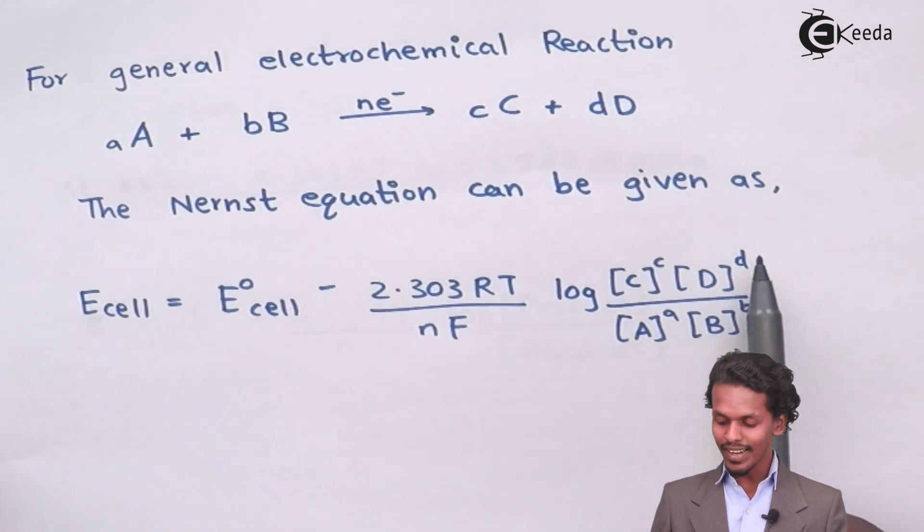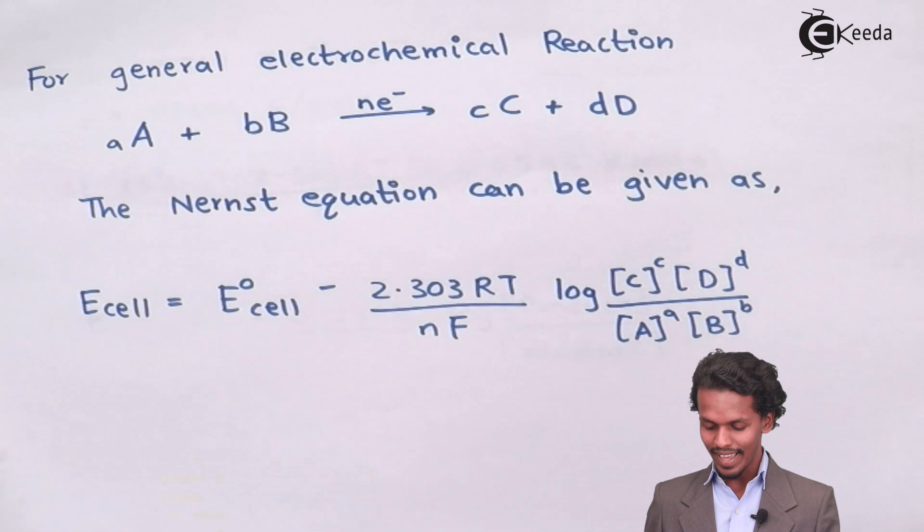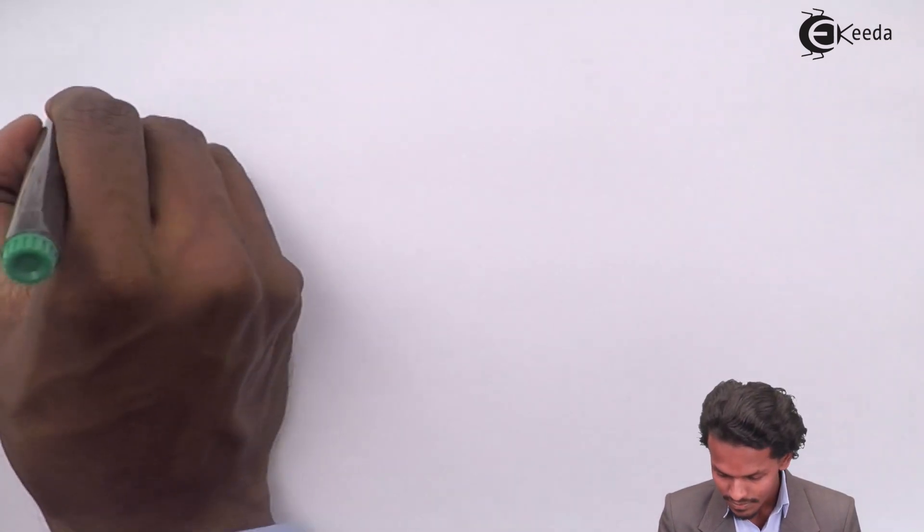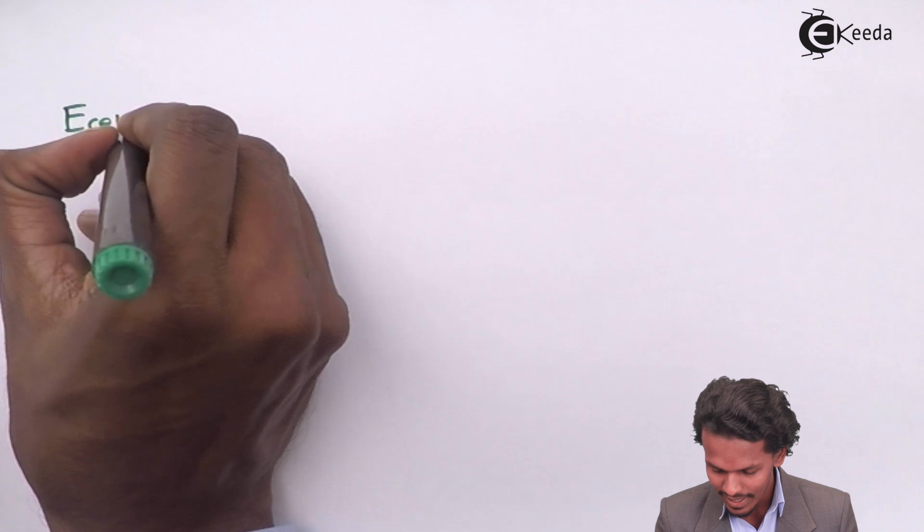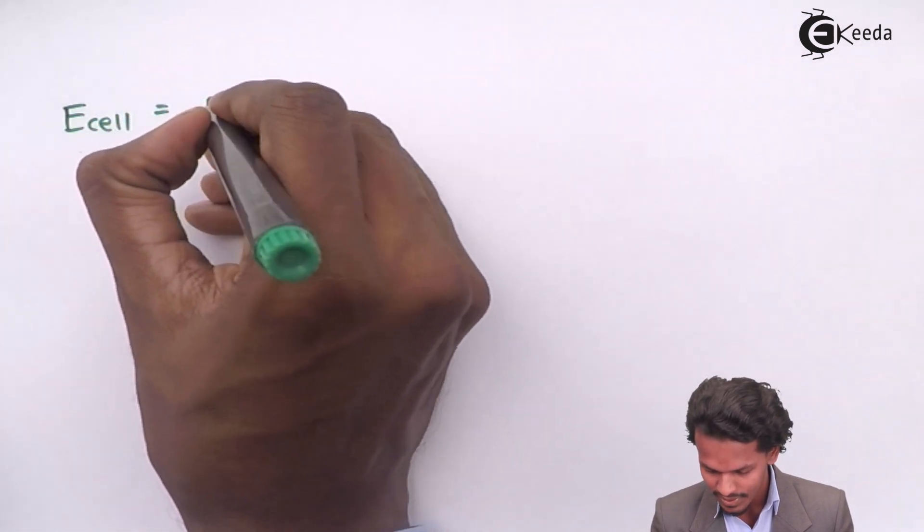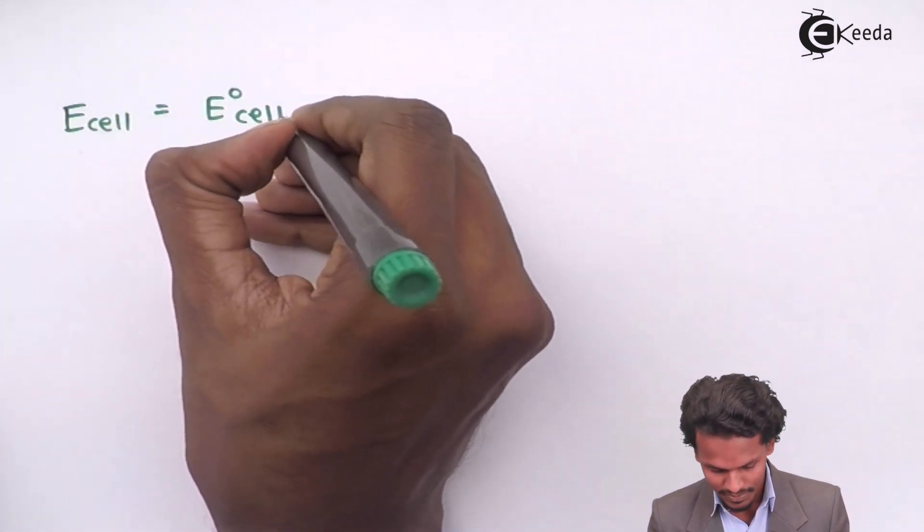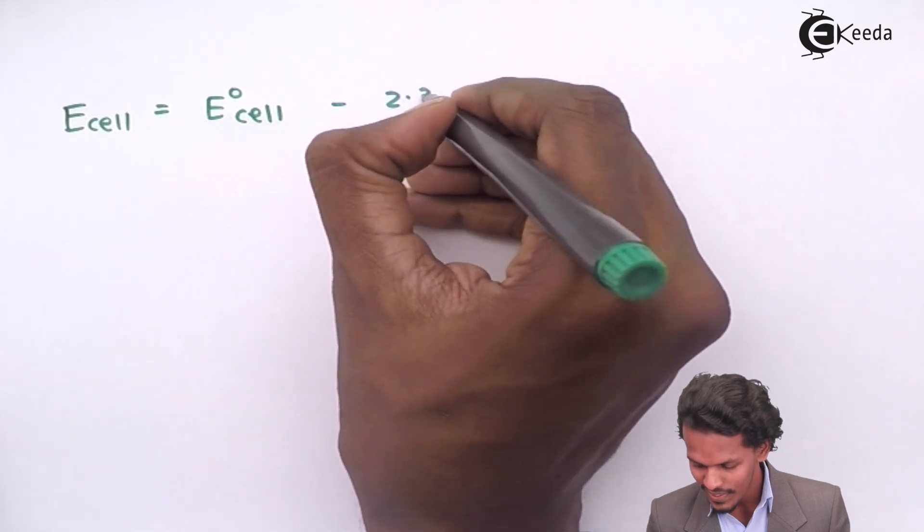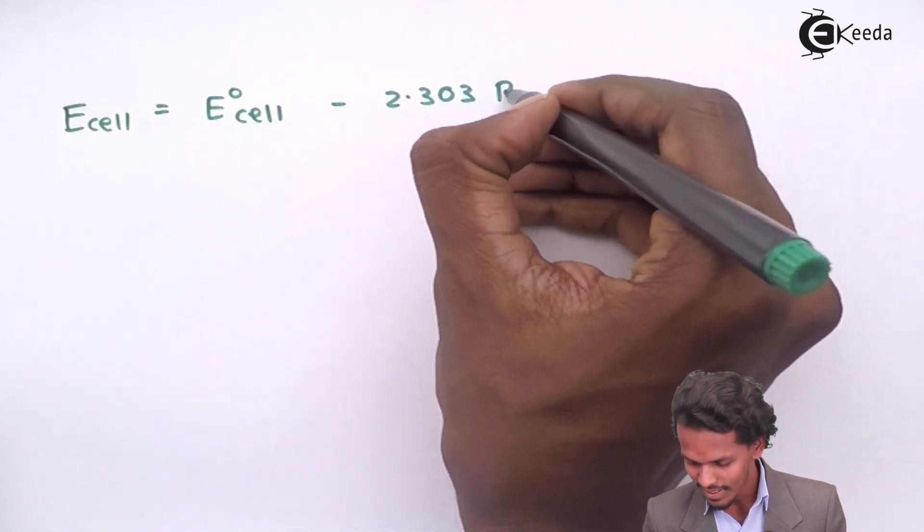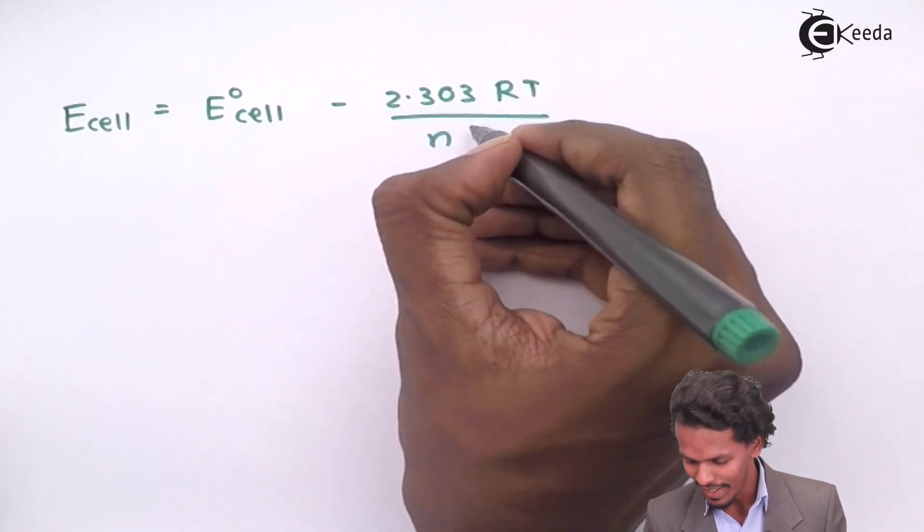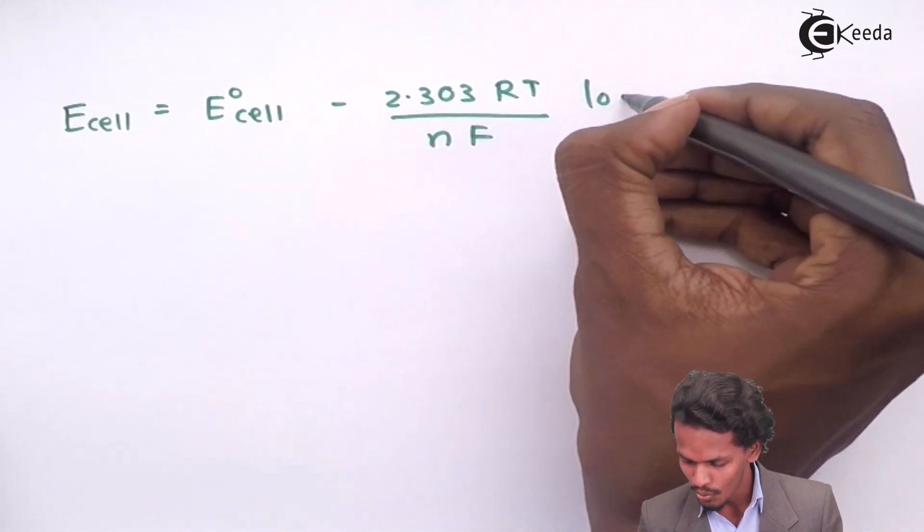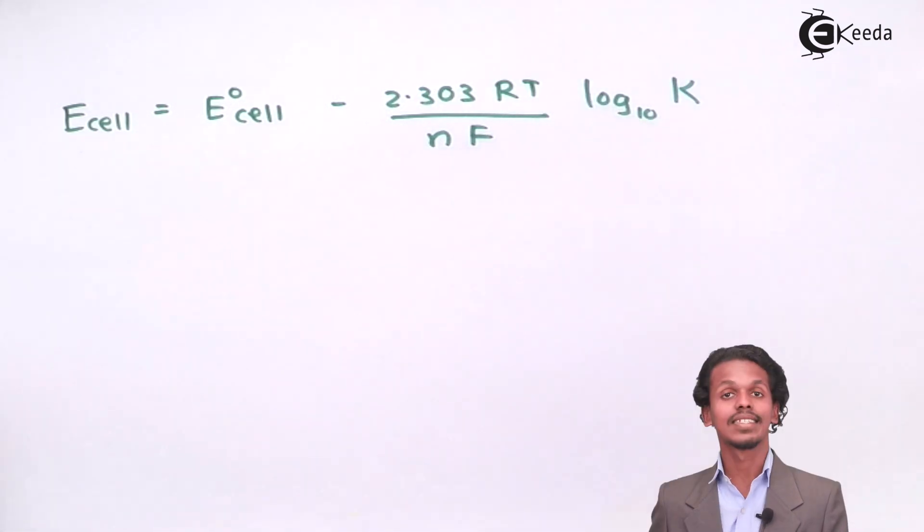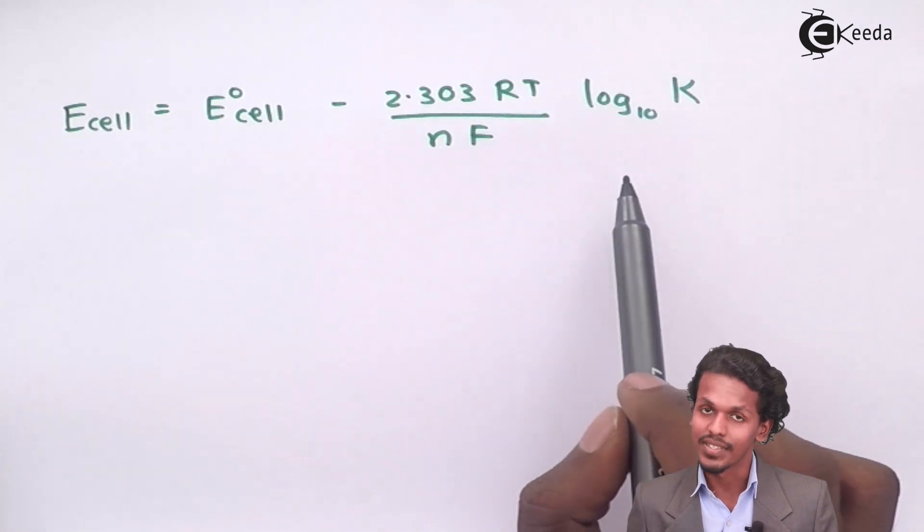Since this is nothing but the chemical equilibrium constant that we did in our 11th standard, therefore I could write this as E cell equals E°cell minus 2.303RT divided by nF into log to the base 10 of K, that is equilibrium constant.